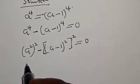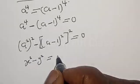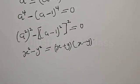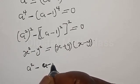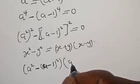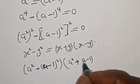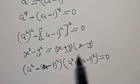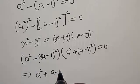Now remember, if you have a² minus y² it is the same thing as (a+y) multiplied by (a-y). Therefore our equation becomes (a² - (a-1)²) multiplied by (a² + (a-1)²). Here (a²+(a-1)²) is (a+y) and (a²-(a-1)²) is (a-y).